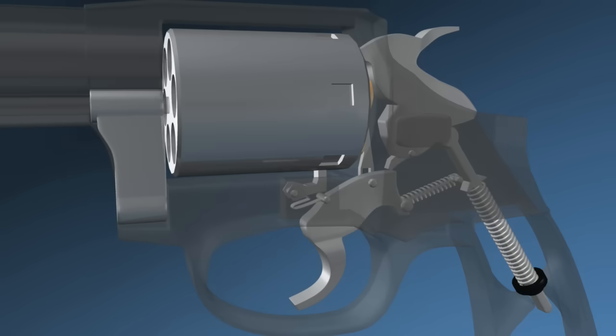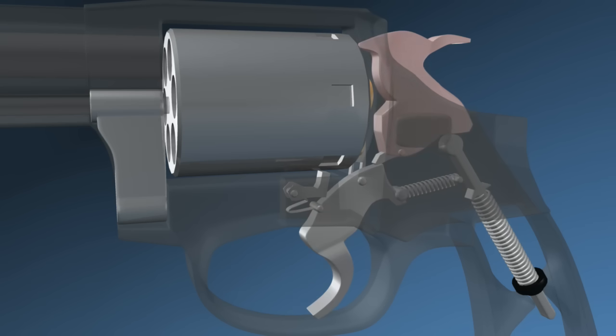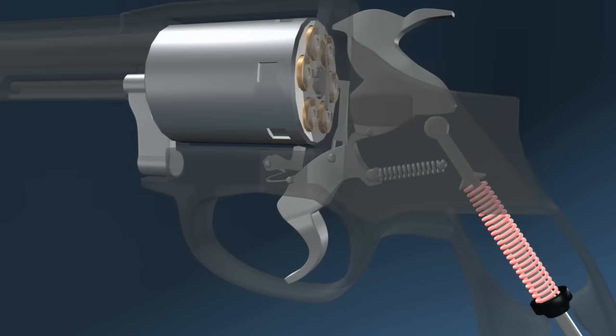Let's look at the firing sequence. The trigger lever pushes the hammer backward. As it moves backward, the hammer compresses a metal spring in the handle.